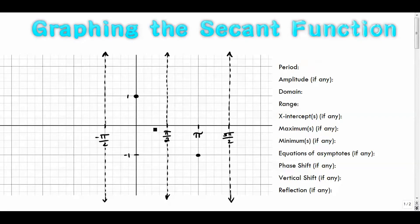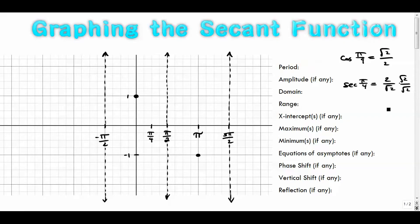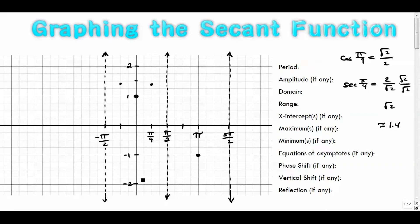For pi over four: the cosine is radical two over two, so the secant is that flipped over. Rationalized, you get radical two, which is roughly 1.4. So when x is pi over four, y is about 1.4 — this would be right in here between 1 and 2. Same deal at negative pi over four, you get negative radical two, about negative 1.4, plotted right there.